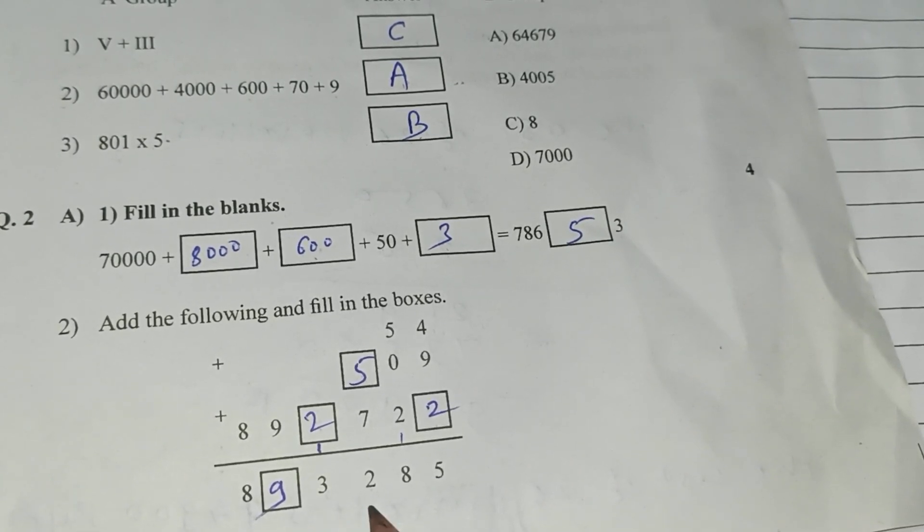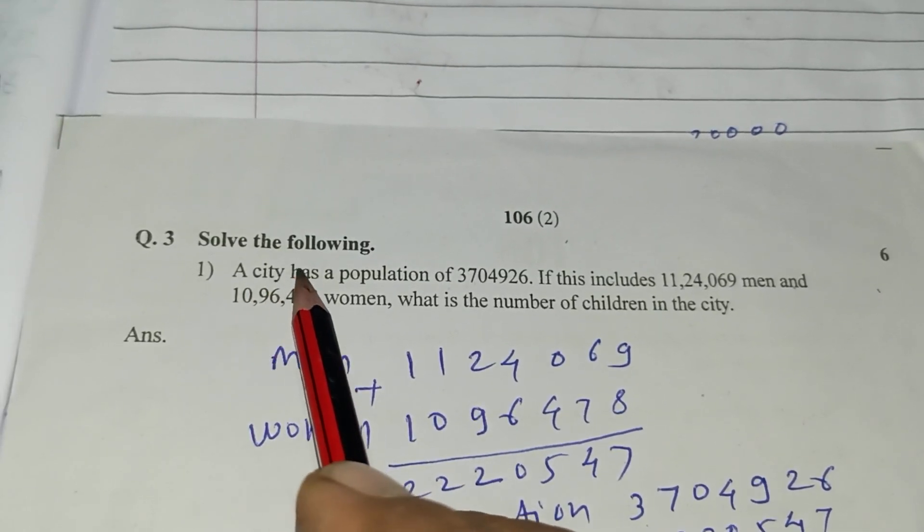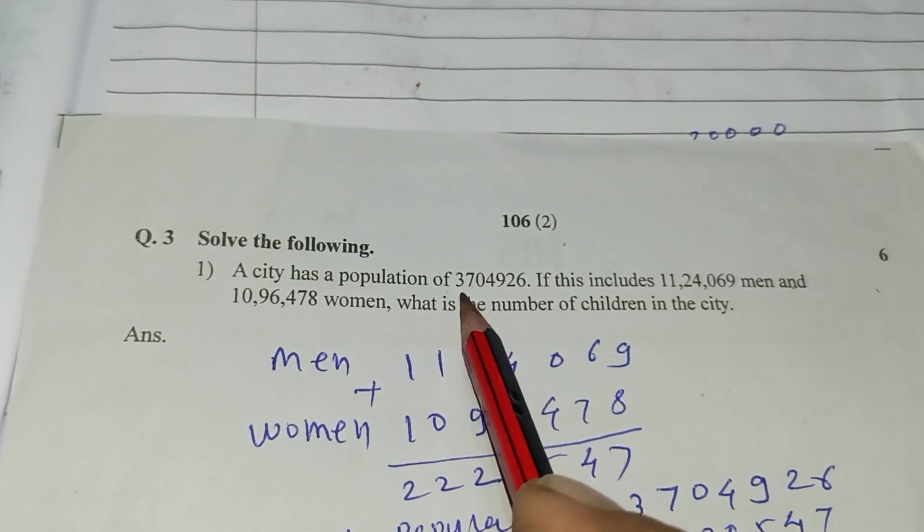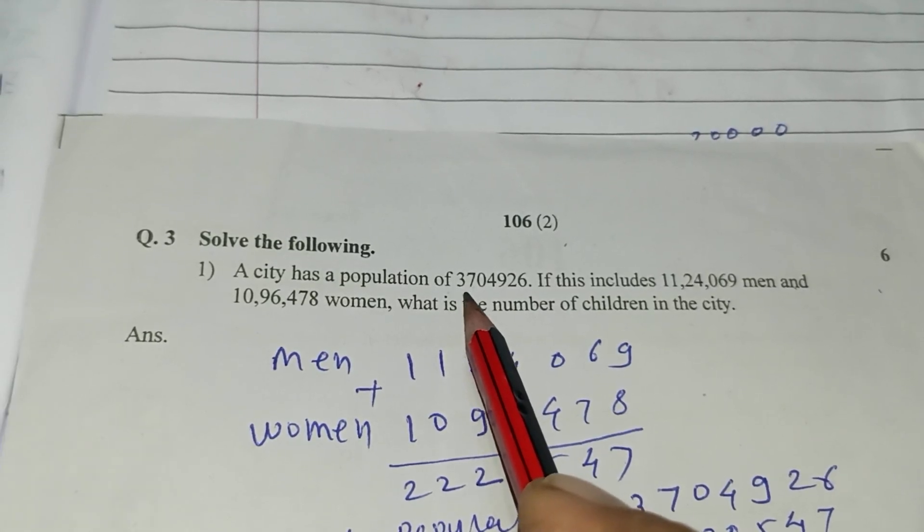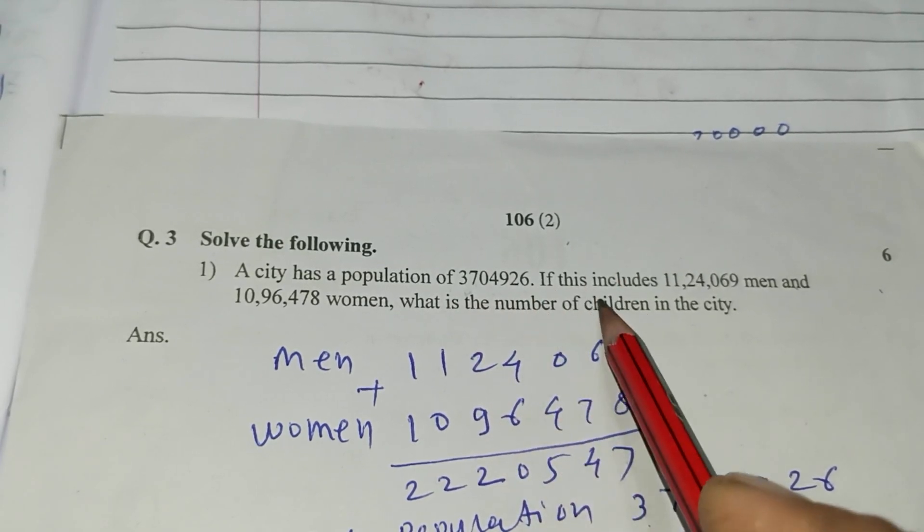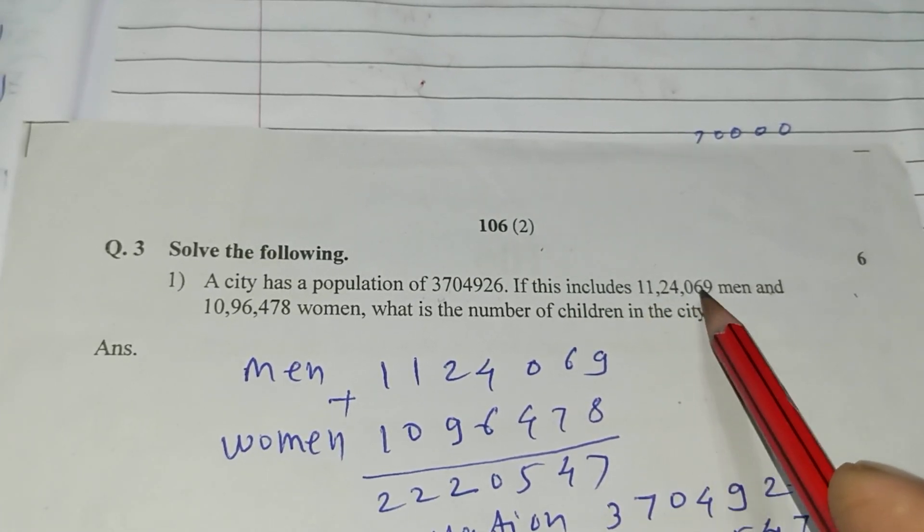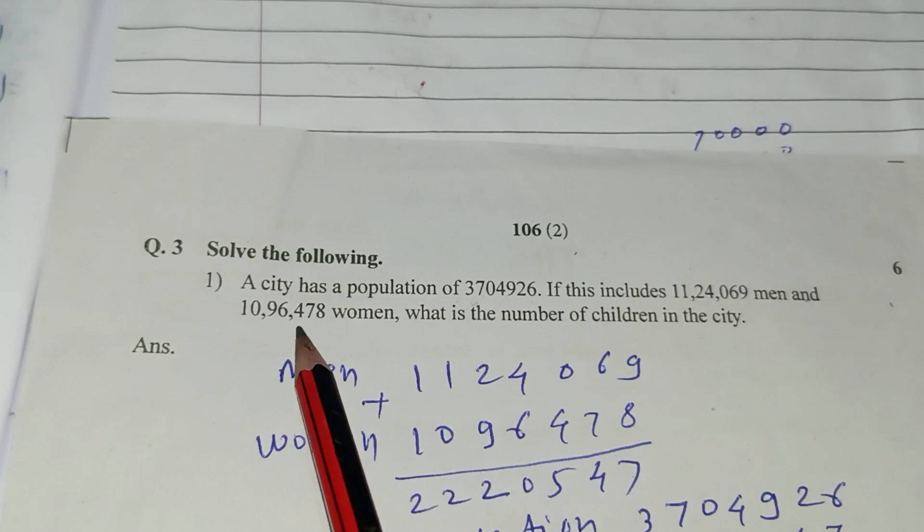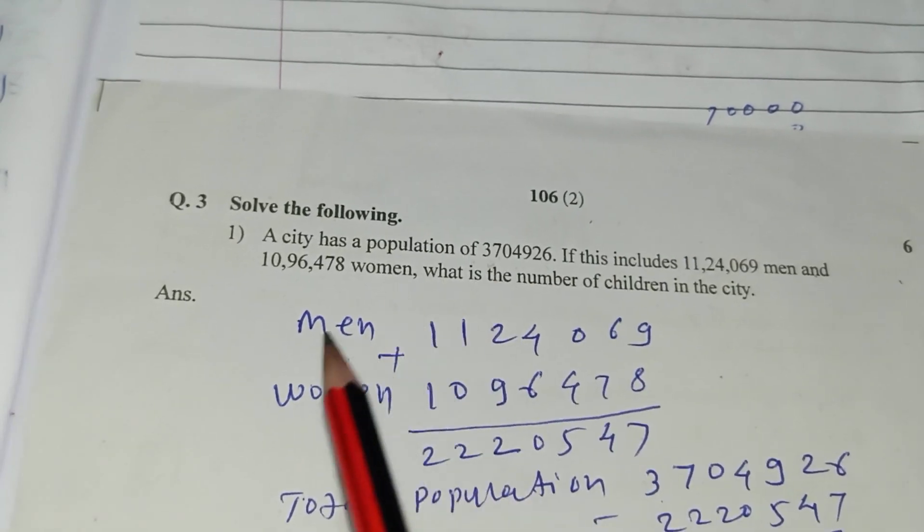Question number 3, solve the following. A city has a population of 37,04,926. If this includes 11,24,069 men and 10,96,478 women, what is the number of children in the city?